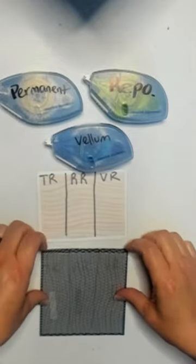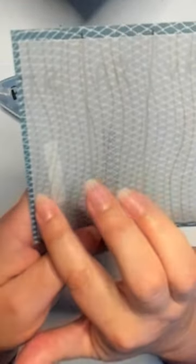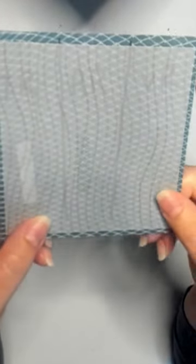But where you really see the difference is when you put a piece of our darker designer paper behind it. You really can see the tape runner, the repositionable, and the vellum just disappears.